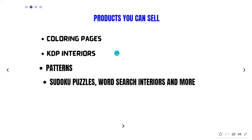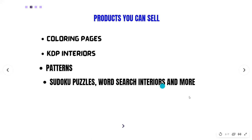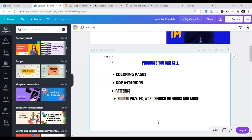Products you can easily sell on these platforms include KDP interiors, coloring pages, graphic patterns, sudoku puzzles, word search interiors, and many more. There are a lot of things you can sell as PDF downloads. If you are doing your own interiors — KDP interiors, patterns, sudoku puzzles, word search, coloring pages — all of that is fine. Let's move to some of the platforms where you can start selling these items.